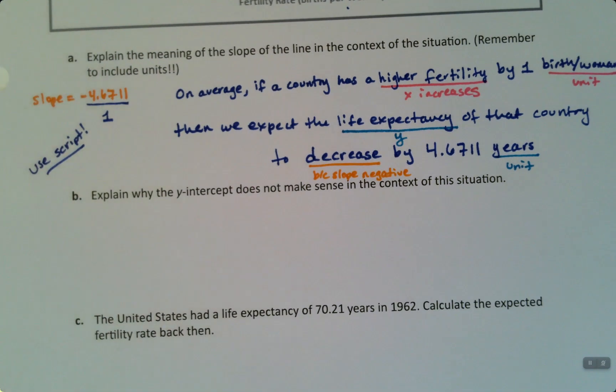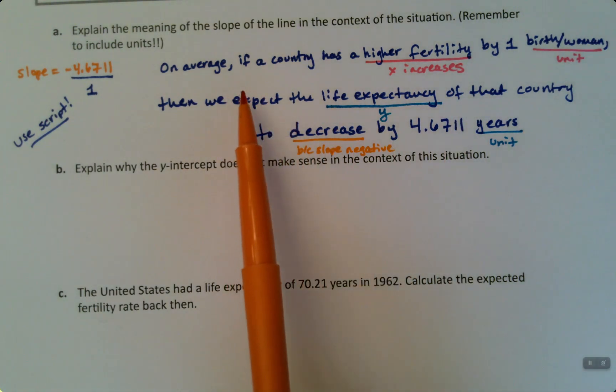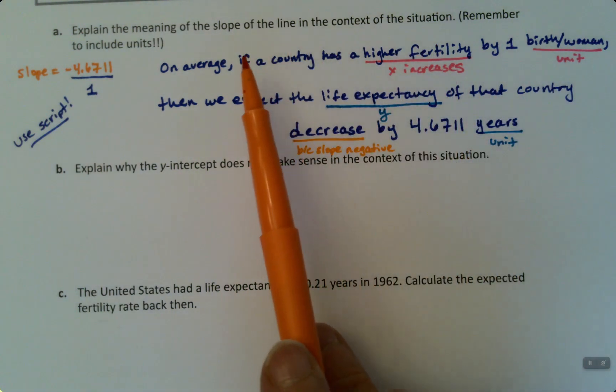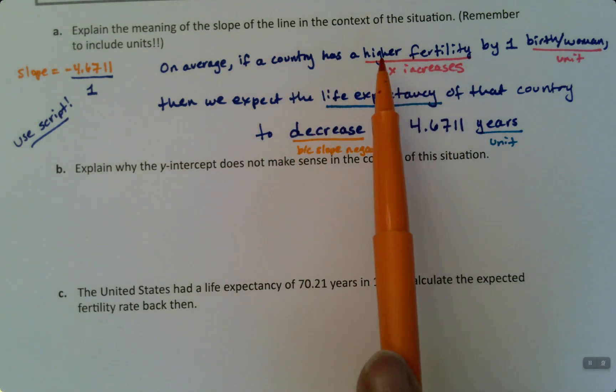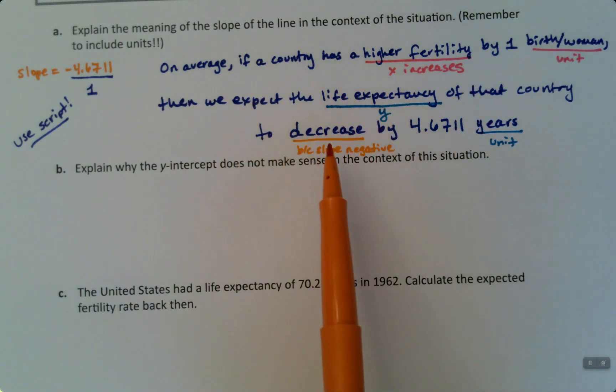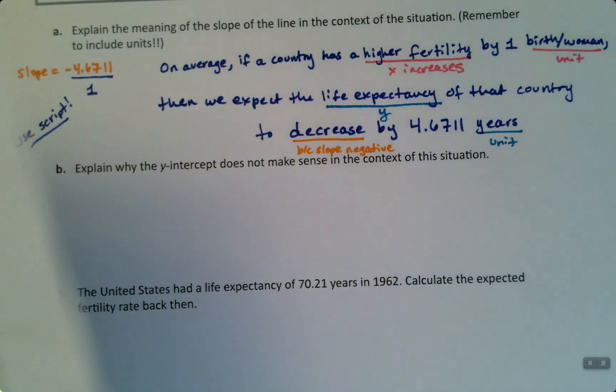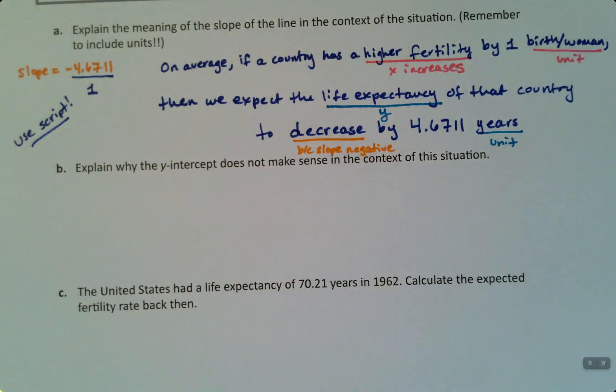And I will say what I said earlier. Scripts are lovely, but they're giving you the general pattern that you're trying to follow, but you can't be so wedded to it that the English doesn't make sense, that your sentence doesn't make sense. So I didn't quite say it exactly the way that the script writes it. So the script says, on average, if x increases by 1, okay, but that's x in context, fertility of a country. So if the fertility of the country increases, is higher by 1, then the life expectancy, the y, will, and then you have to choose increase or decrease. That's why it says increase or decrease. You have to choose based on whether it's positive or negative.